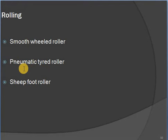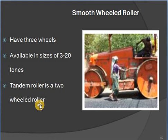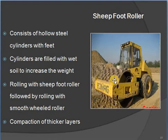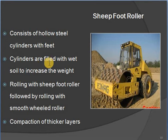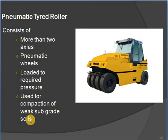Rollers: smooth wheel roller has three wheels, available in sizes of 3 to 20 tonnes. Tandem roller is a two-wheel roller. Sheepsfoot roller consists of hollow steel cylinders with feet; cylinders are filled with wet soil to increase weight — rolling with sheepsfoot roller is followed by rolling with smooth wheel roller for compaction of thicker layers. Pneumatic tire roller consists of more than two axles of pneumatic wheels loaded to required pressure, used for compaction of weak subgrade soils.